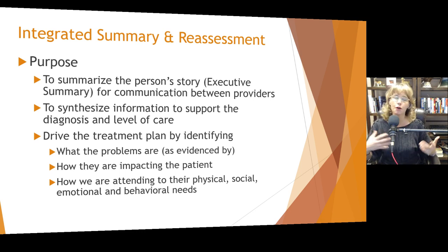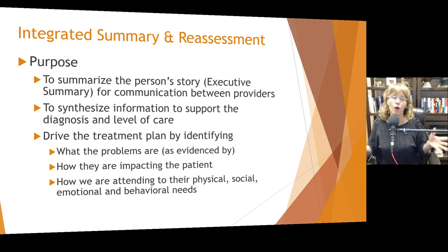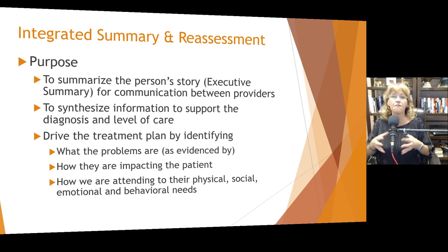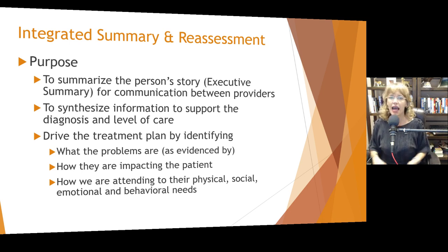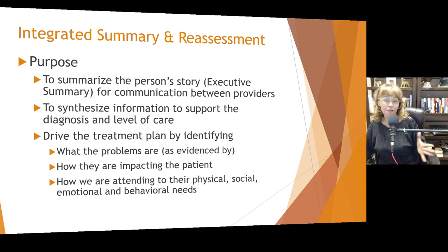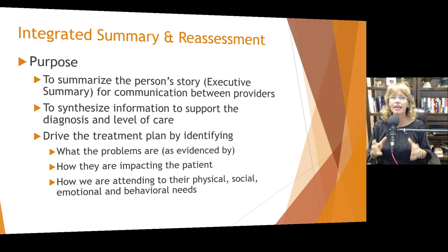The integrated summary can be used to drive treatment planning by identifying what the problems are. For example, Sally Smith is a 35-year-old cisgender white female presenting with symptoms of depression as evidenced by fatigue, apathy, and increased guilt. Anytime you say the person has a diagnosis or a problem, you have to define how you know this. In the integrated summary, identify how these problems are impacting the patient. Then talk about: we have these problems as evidenced by X, they're impacting the patient in these ways, and this is what we're going to do to try to address it. It's an executive summary that squishes everything together in short form so someone can scan it to get an understanding of where that client is.